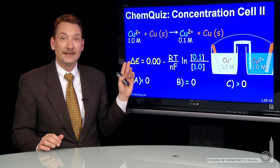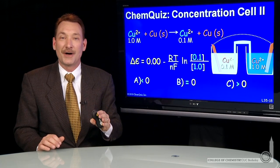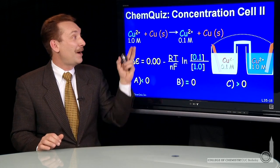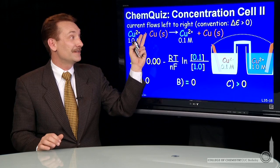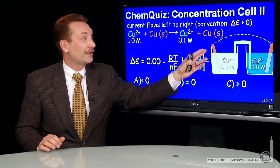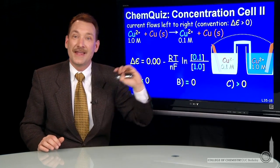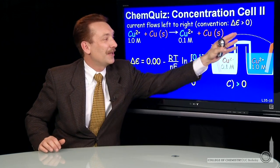So the overall potential difference is going to be positive. So a positive cell potential difference in our convention means current flows from left to right, and that we understand. Current flowing from left to right